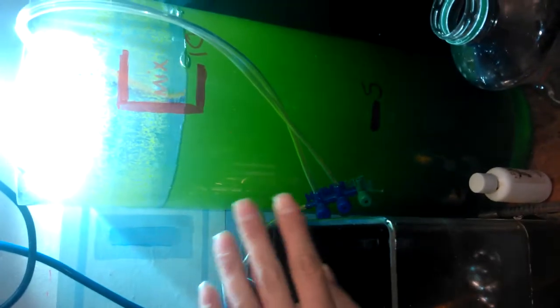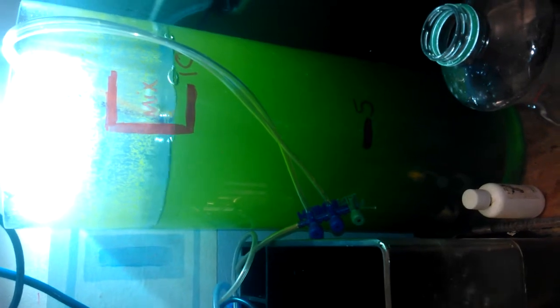Before it will be ready for the copepods and the rotifers. I have a 15 liter nano tank which I have some Chaeto in there and you can see the copepods on the glass, plastic, whatever you want to call it. And we have a filter which I use.